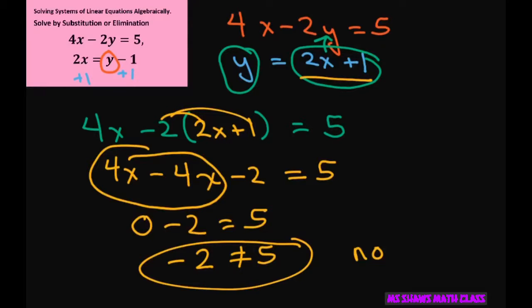And the reason there's no solution is because the lines are parallel. Remember, these two lines don't intersect. So if I rewrote this equation in this format, I would get y equals 2x minus 5 halves. So our slopes are the same. That's why there's no solution.